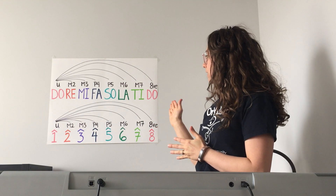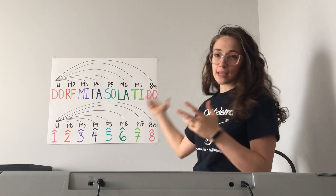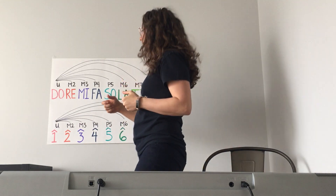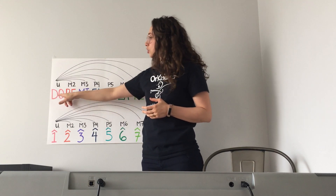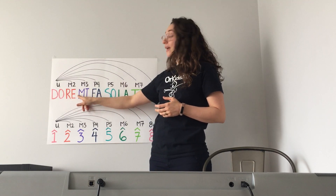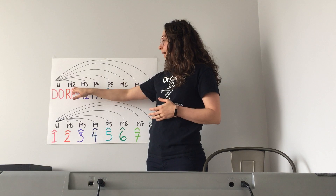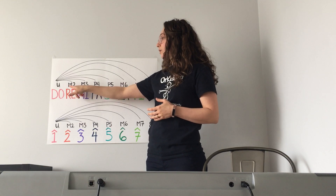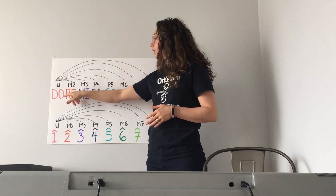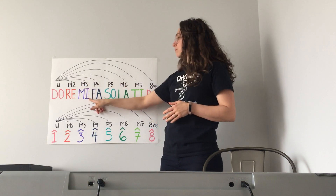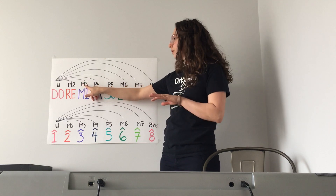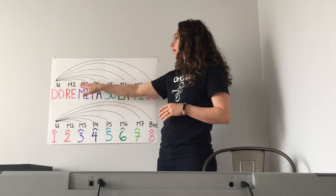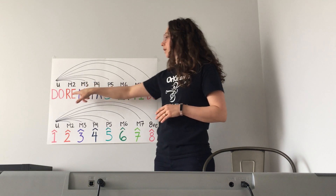Let me start by explaining it to you and then we're going to sing through it. First of all, Do to Re — the space between Do and Re in a major scale is called a major second, so we write that as a capital M and then a two. From Do to Mi is a major third — the quality is major, the number is a third, so it's a capital M three.